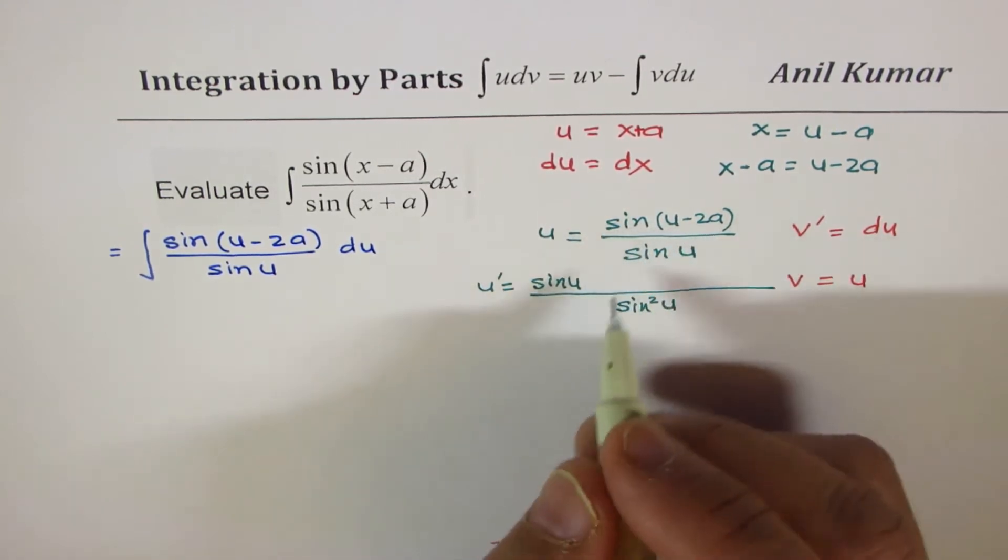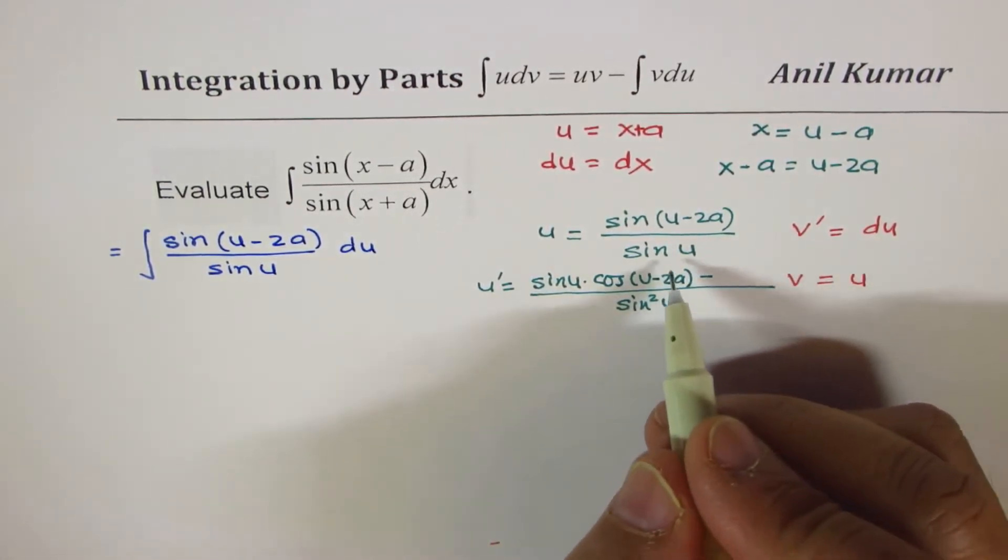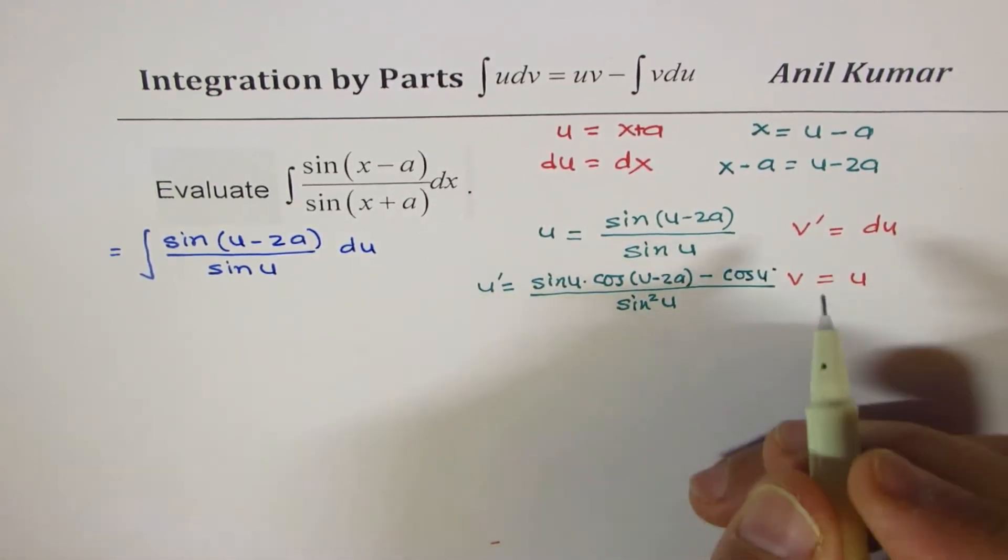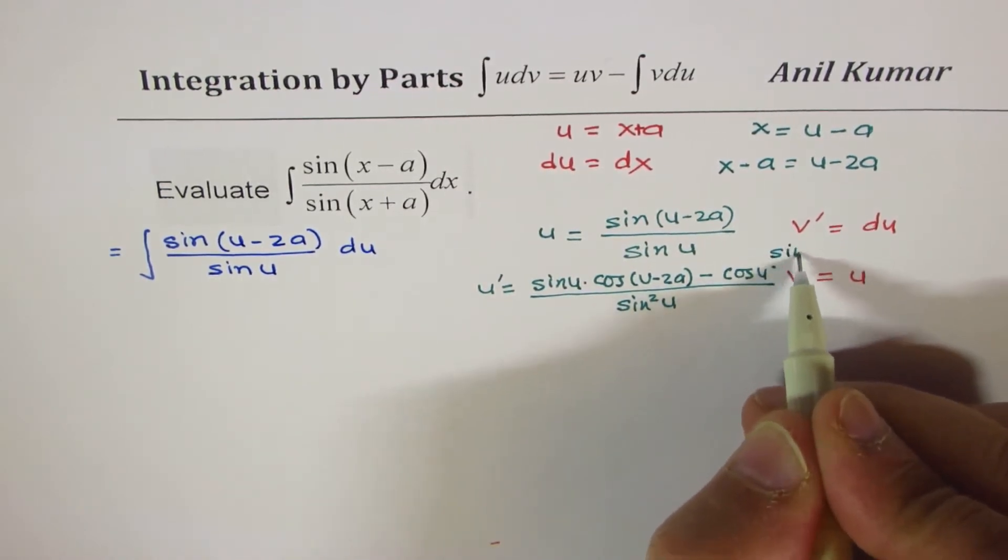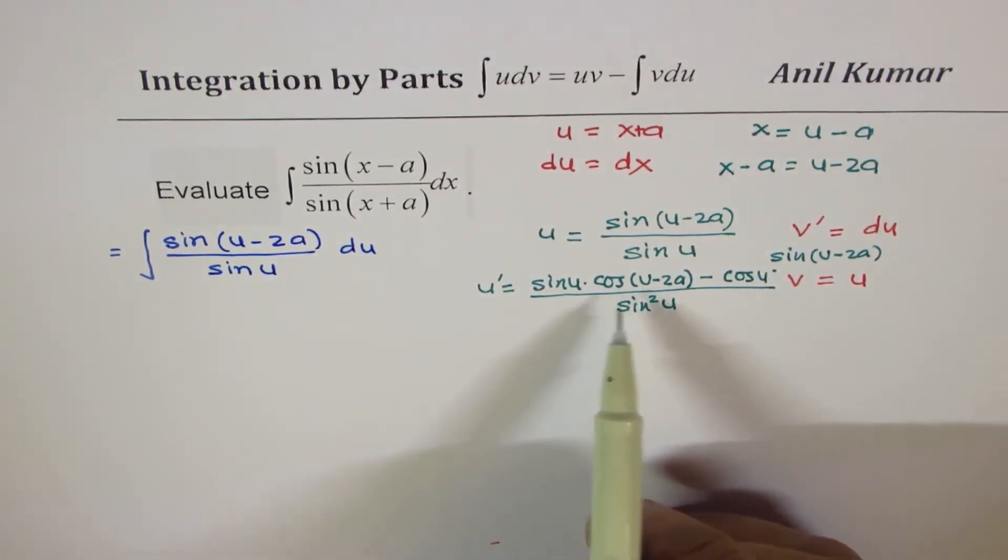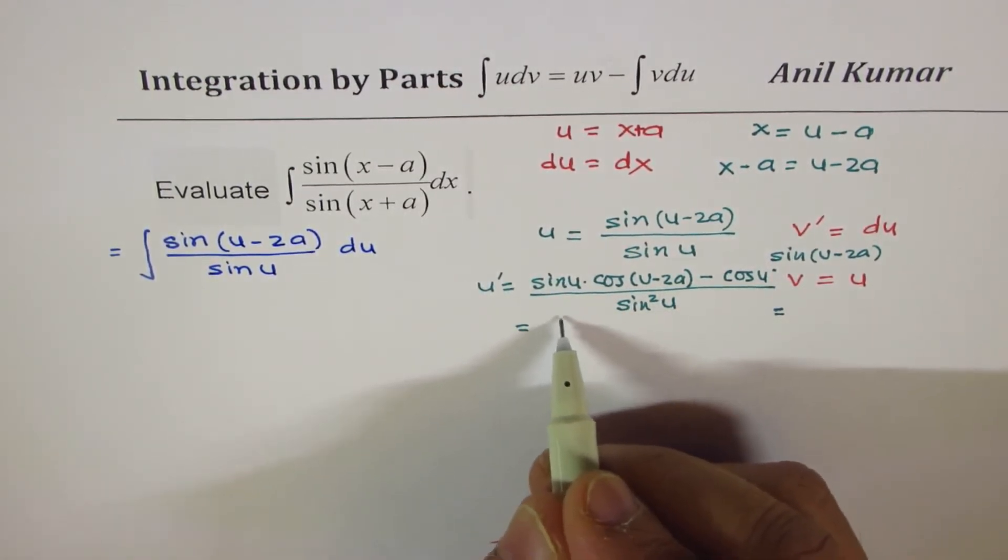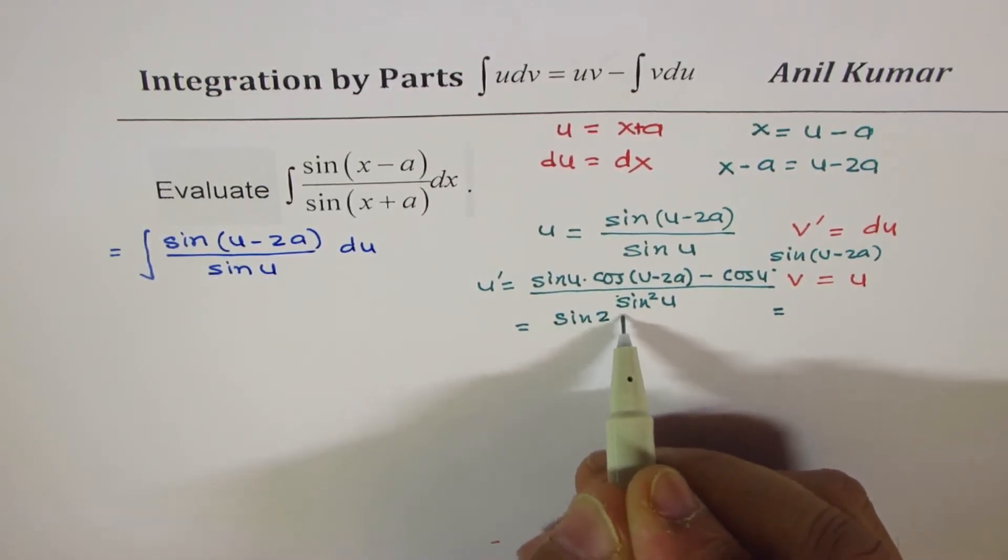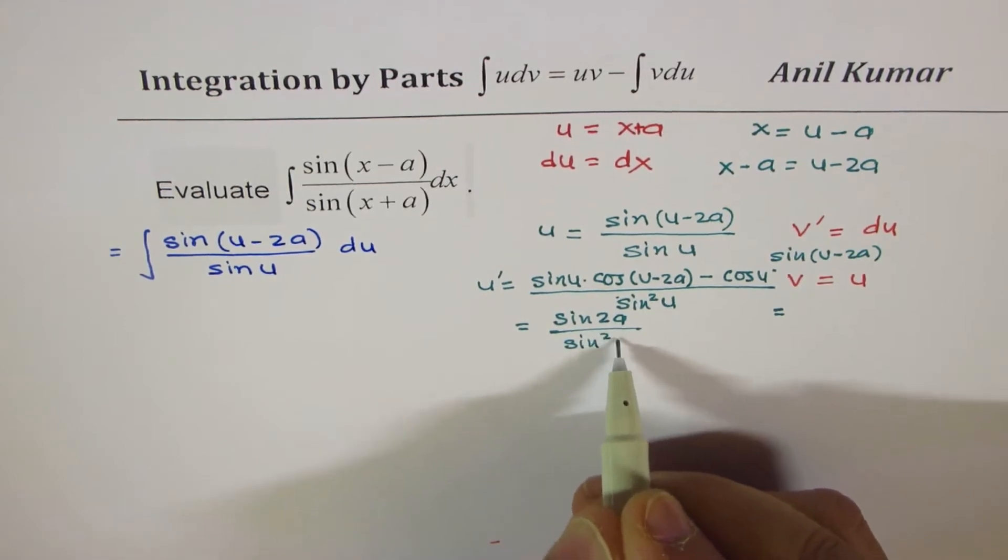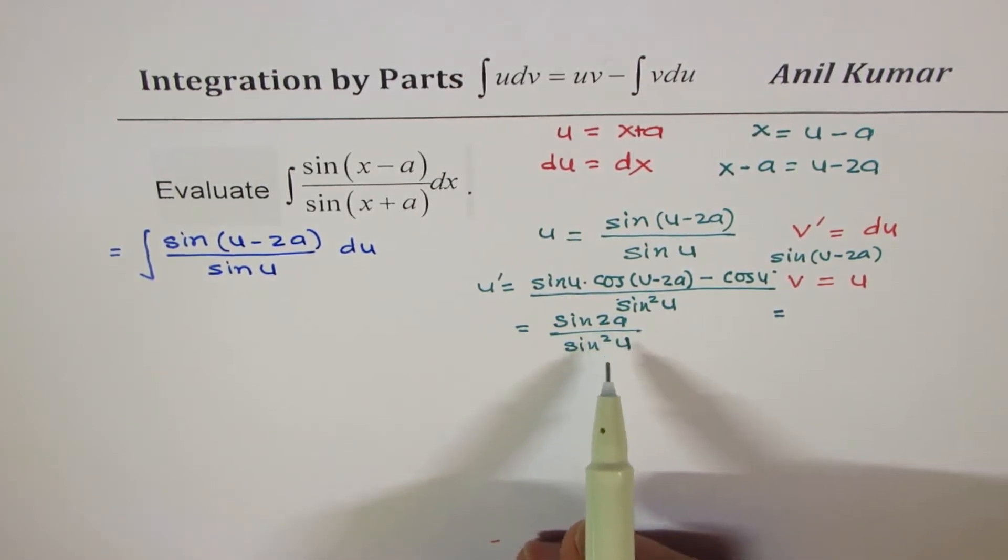The derivative of sin(u-2a) will be cos(u-2a) minus—now the derivative of sin(u) is cos(u)—times sin(u-2a). Now here you can apply the formula sin(a-b). When you do a minus b, a is u and u cancels. So you could write this as sin(2a) over sin²(u). That is what we get as the derivative of this particular u'.